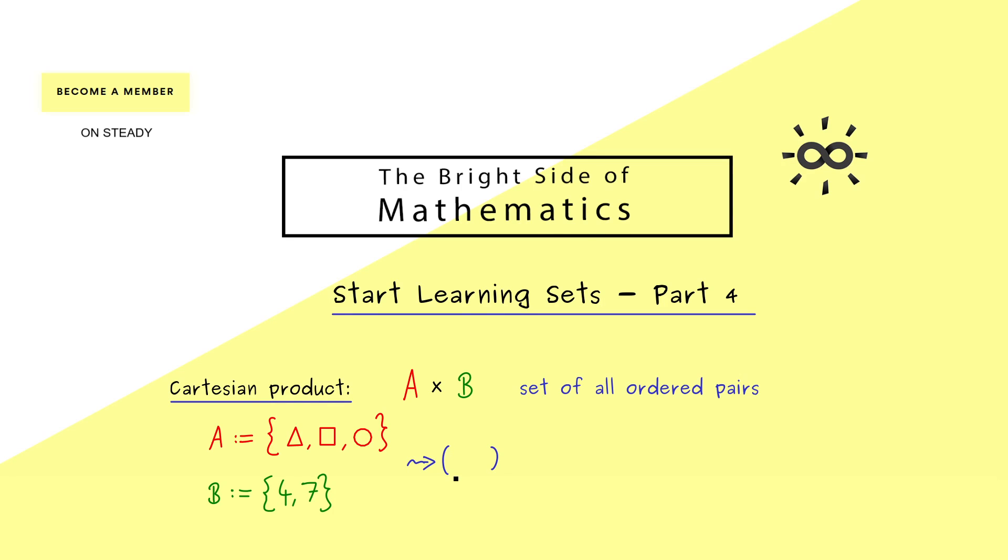Now an ordered pair we would always denote with parentheses, so round brackets. Then we have a comma in the middle, and on the left-hand side we would have an element from A, and on the right-hand side an element from B. So for example, (triangle, 7) would be an ordered pair, so an element in A times B.